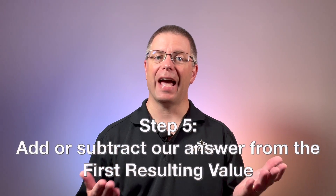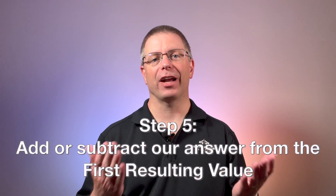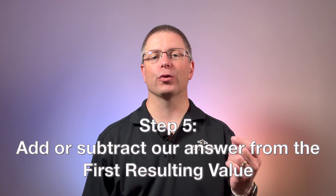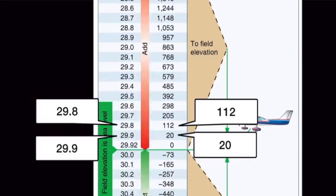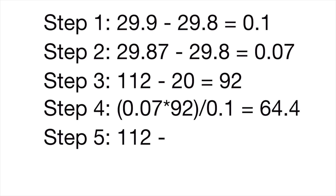The last step is to add or subtract our answer from the first resulting value. In this case, because the resulting values go from high to low, we'd subtract 64.4 from 112, resulting in 47.6. If the resulting values go from low to high, we'd have added 64.4 to the first resulting value.